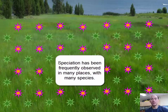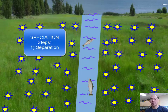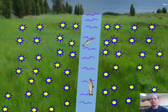To recap, speciation has three steps. The first is Separation — this is when the population is separated into two reproductively separate populations, usually by something like a body of water, a mountain range, or other barriers.